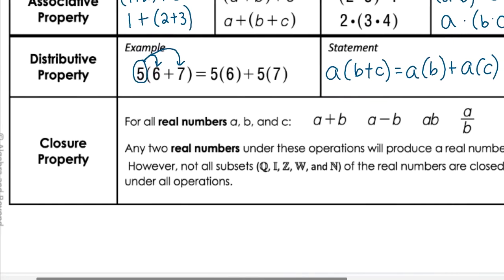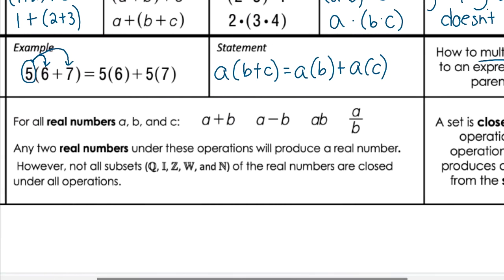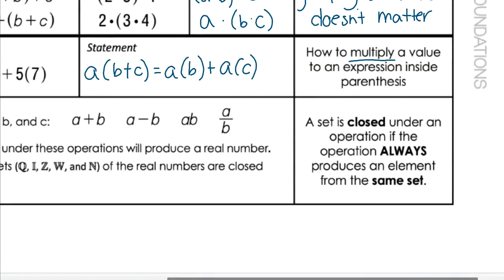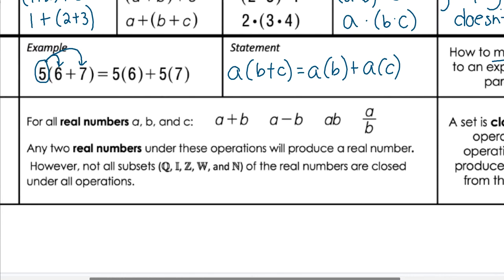Our final property is called the closure property. For all real numbers, a + b, a − b, a × b, and a ÷ b — any two real numbers under these operations will produce a real number. However, not all subsets — natural numbers, whole numbers, integers — are closed under all operations. A set is closed under an operation if the operation always produces an element of the same set. So whole numbers producing whole numbers, or integers producing integers — that's what closure means.